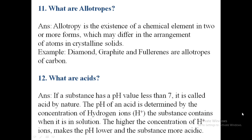Twelfth question: what are acids? If a substance has a pH value less than 7, it is called acidic in nature. The pH of an acid is determined by the concentration of hydrogen ions (H⁺) that the substance contains when it is in a solution. A higher concentration of H⁺ ions makes the pH lower, and the substance is more acidic.